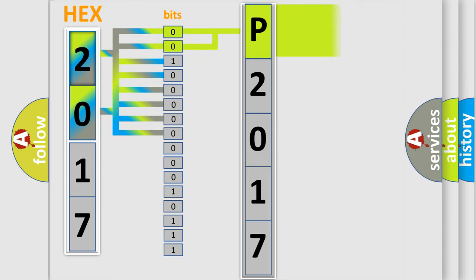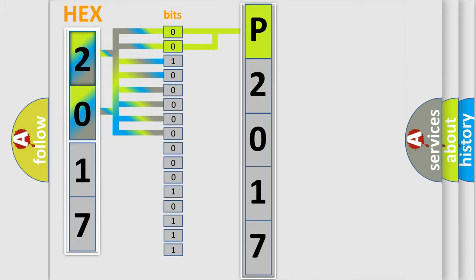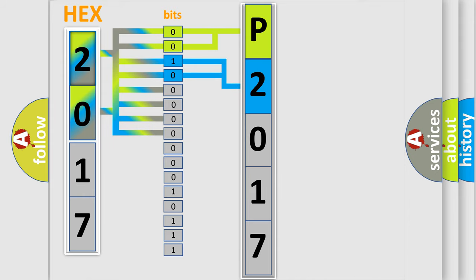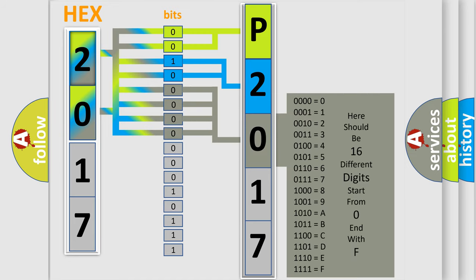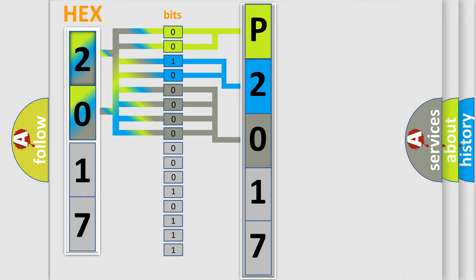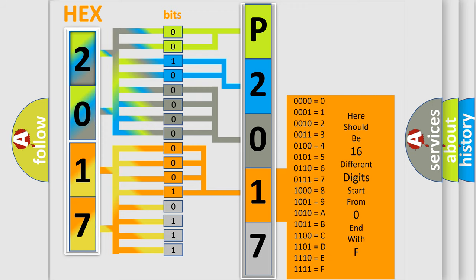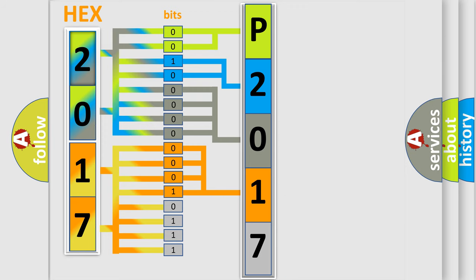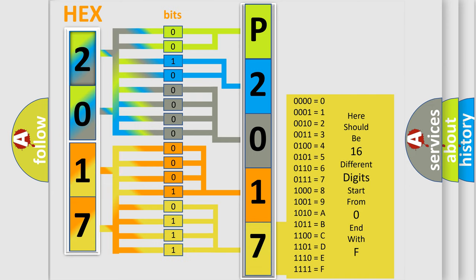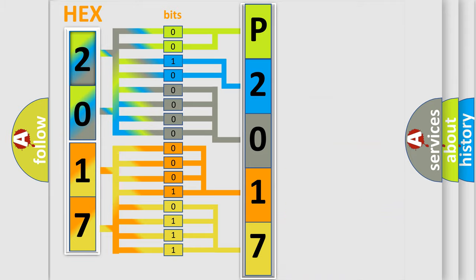By combining the first two bits, the basic character of the error code is expressed. The next two bits determine the second character. The last bits of the first byte define the third character of the code. The second byte is composed of a combination of eight bits — the first four bits determine the fourth character, and the last four bits define the fifth character. A single byte conceals 256 possible combinations. We now know how the diagnostic tool translates the received information into a more comprehensible format.